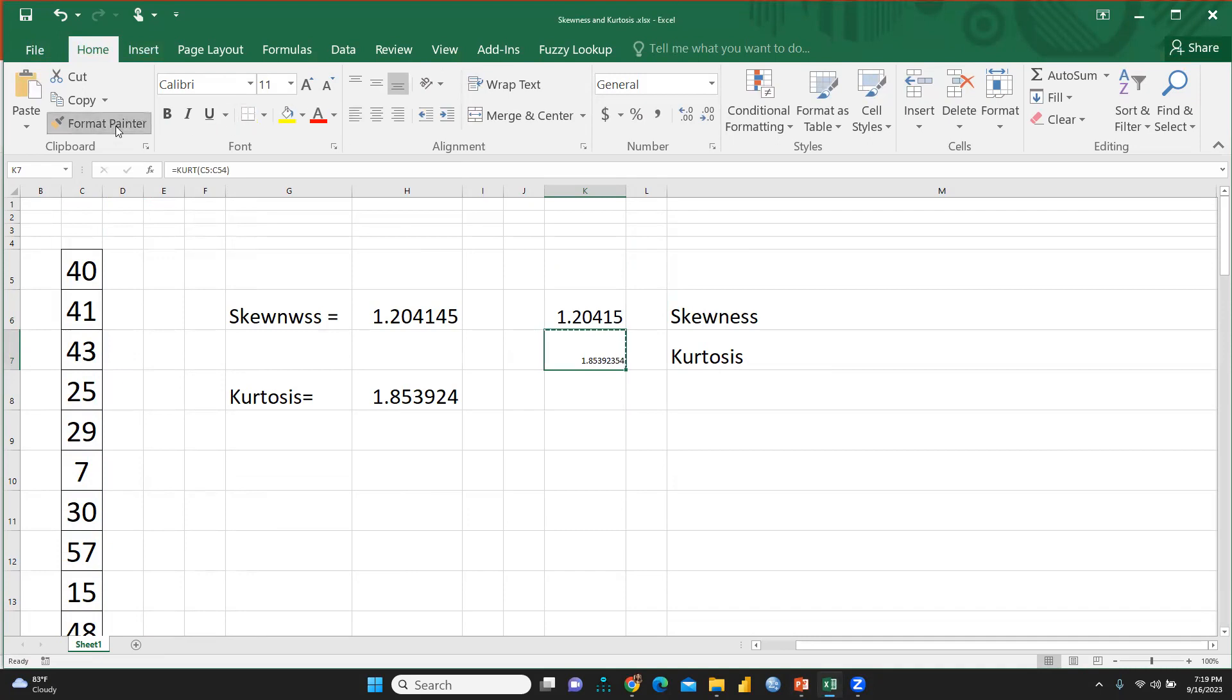Now you can see this is the value of kurtosis and let me make it a little bigger, right. So you can see 1.2 is skewness and 1.8 is kurtosis. That means what are the slides I have shown you with citation we can say our data is positively, here is a skewness, it is not zero, it is positively towards the positive side.